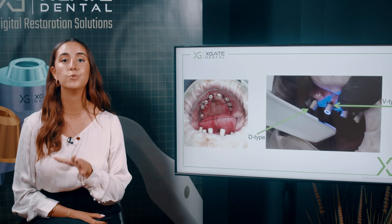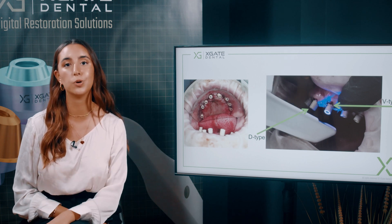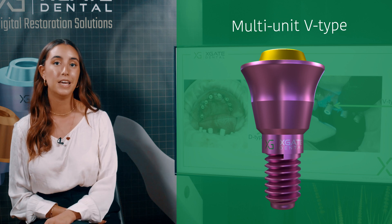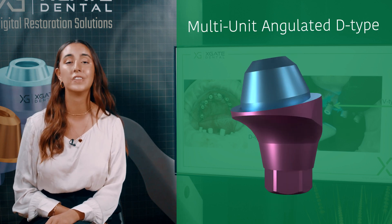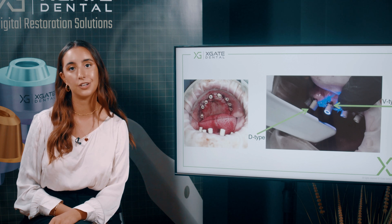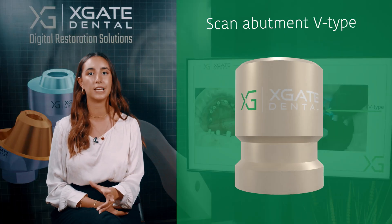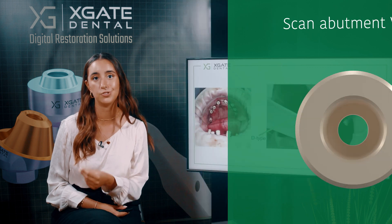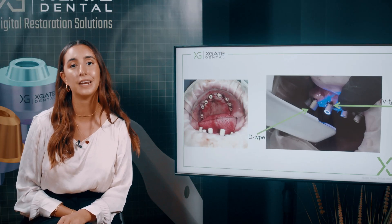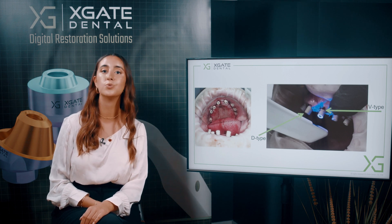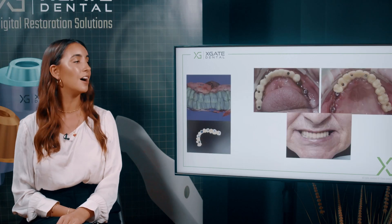The next step is taking impressions. We place scan abutments on top of all the multi-units. We use different types: for the straight multi-units we use multi-unit scan abutments of V-type; the angulated multi-units use D-type. So you have two different kinds of abutments. You can see by the ring around the scan abutments that we took impressions on top of all the multi-units.